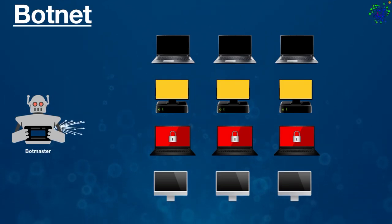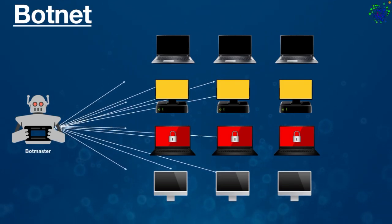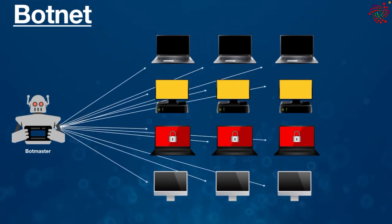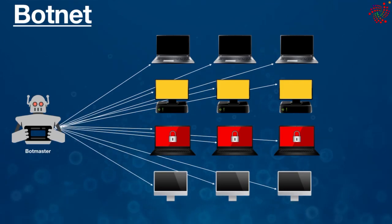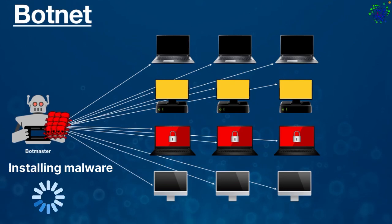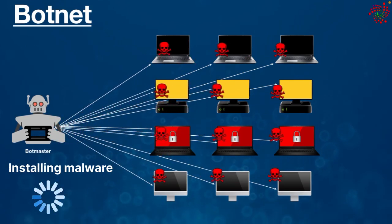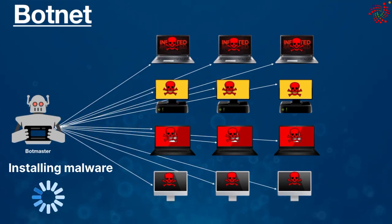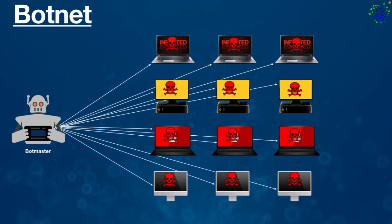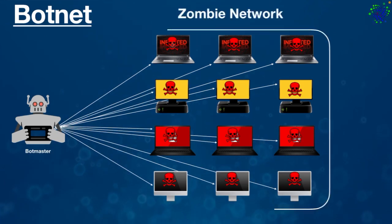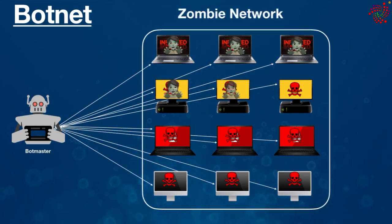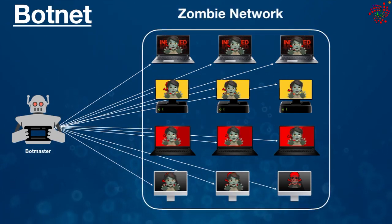So this is how a botnet works or is created. First of all, the bot master targets devices, perhaps by exploiting a vulnerability in computers or by using social engineering tactics to gain access. Then malware is installed via a trojan or other methods on the target computers, converting them into bots. After that, the collective bots form a zombie network — an army of zombies.